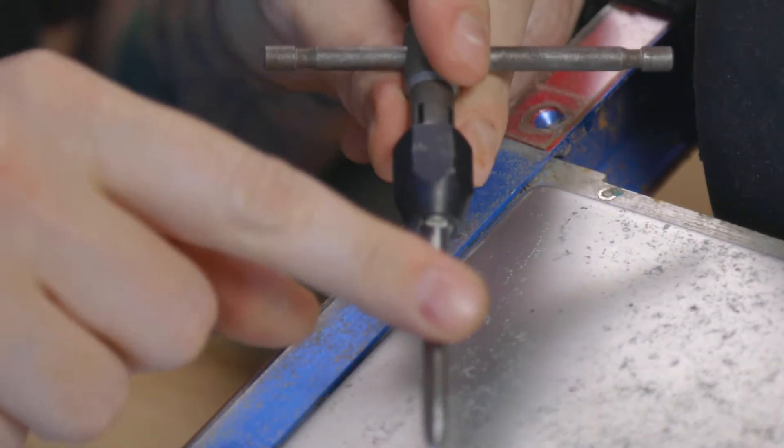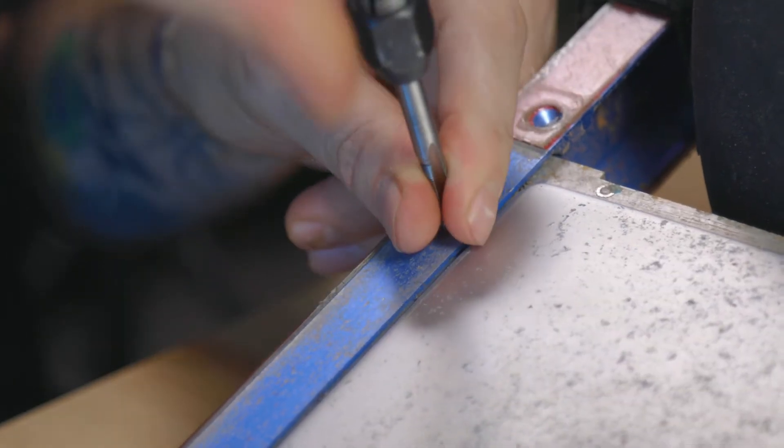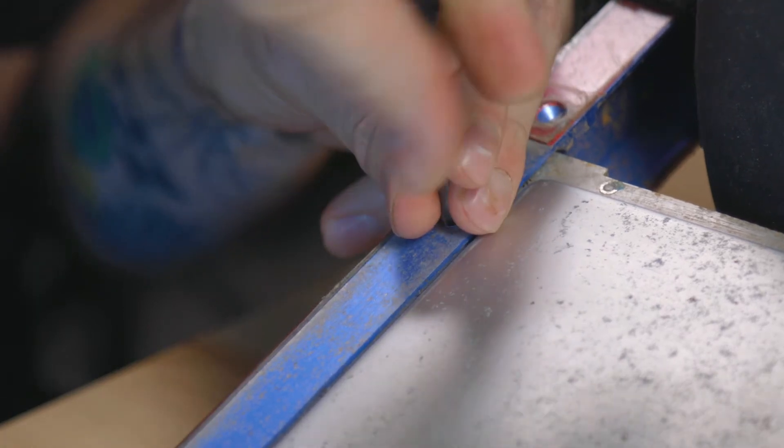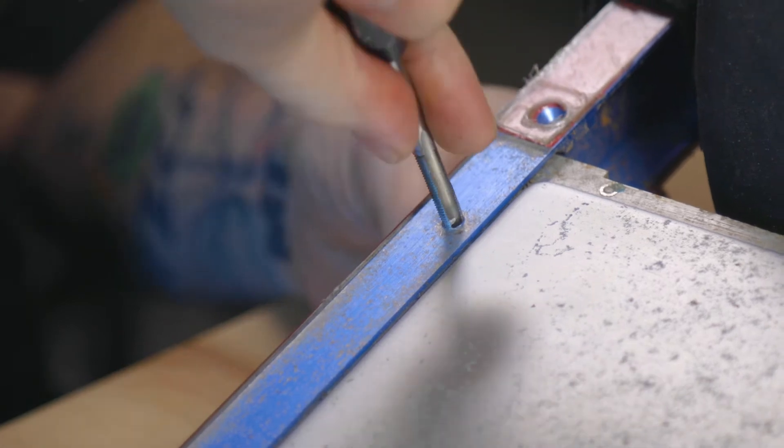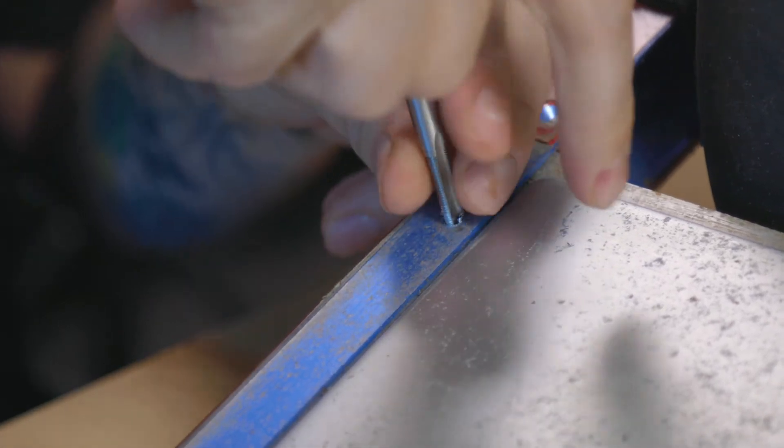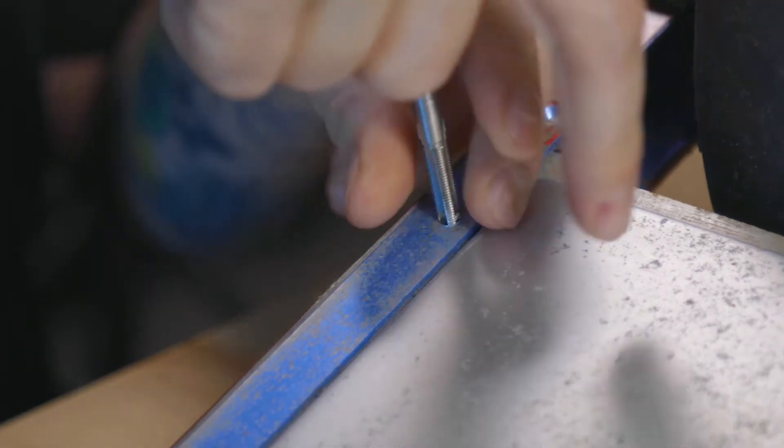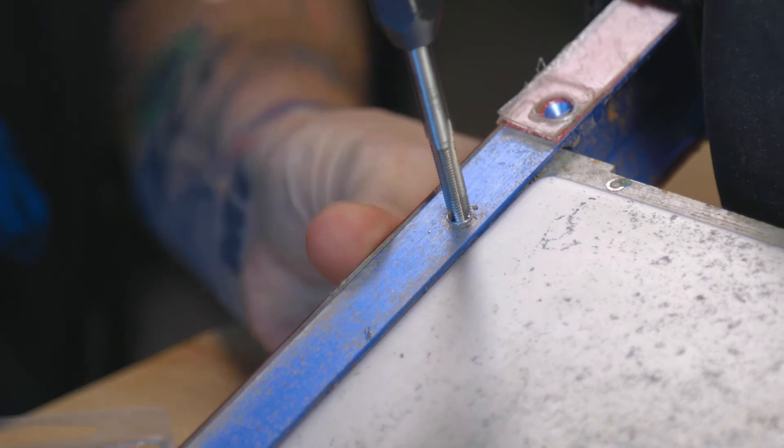Alright so like I said, just insert your tap into the t-handle and then we're just going to tap out a new thread. Super easy. Like I said, keeping this as straight as possible. You want to put a little bit of pressure into this. Not too much. Just a little bit of pressure and it will start. You'll start to feel it threading out a new hole here. Doesn't take much time at all. And I can really feel it start to get tight right now.